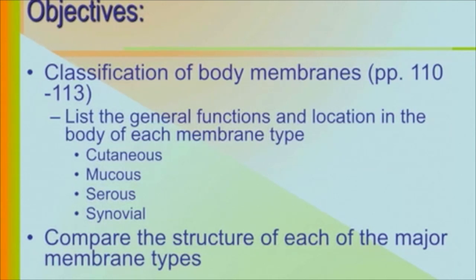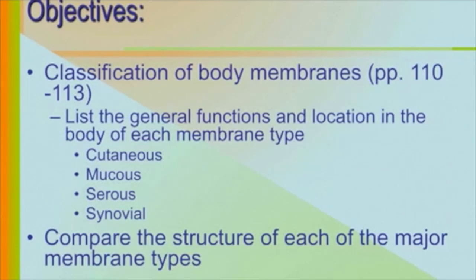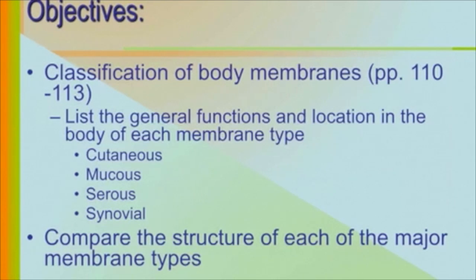Chapter four: skin and body membranes. As you read through the text, look over the objectives prior to reading any section, and check whether you were able to answer or meet those objectives after reading. After completing today's presentation, you should be able to list the general functions and locations of each body membrane type: cutaneous, mucous, serous, and synovial. We'll talk about each one in more detail as we move through this presentation.